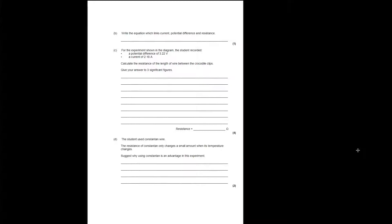Write the equation which links current, potential difference, and resistance. I would write it as V = IR because that's the easiest way to rearrange from. If you wrote R = V/I, that would also be acceptable. But V = IR is easier to rearrange from.